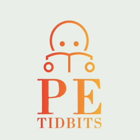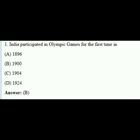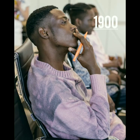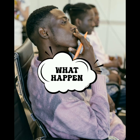Welcome back to PE Tidbits. Today we are going to see a question from the UGCnet 2012 paper: India participated in Olympics for the first time in which year? And the answer is 1900. But what happened in 1900?